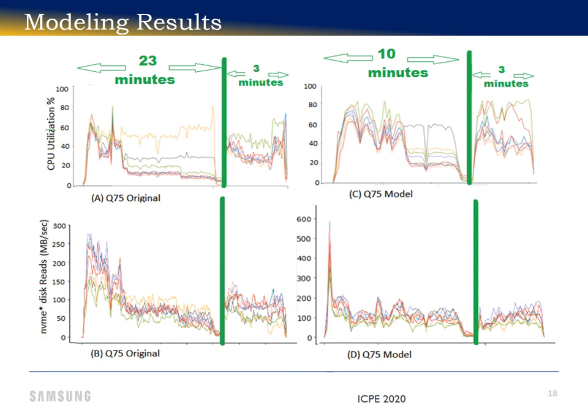All gains from the near storage happened before that barrier, and elapsed time went from 23 to 10 minutes. After the barrier, both original and model take another three minutes to complete.